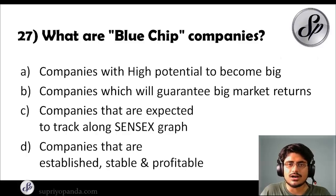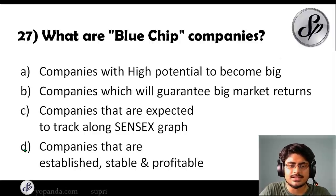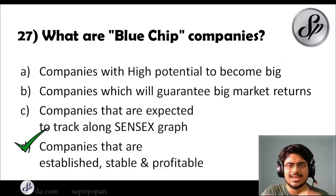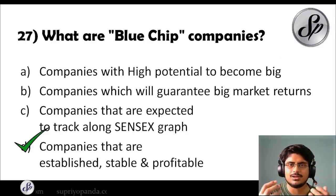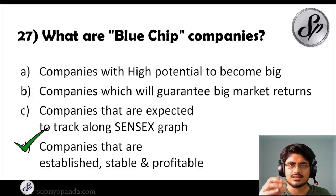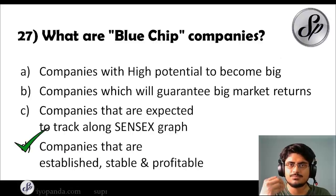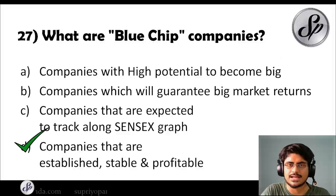Question twenty-seven: what are blue chip companies? The answer is companies that are established, stable, and profitable. Any kind of company that is quite big and stable — one you can almost rely on — these are the blue chip companies. You may have seen blue chip mutual funds and blue chip stocks being discussed.